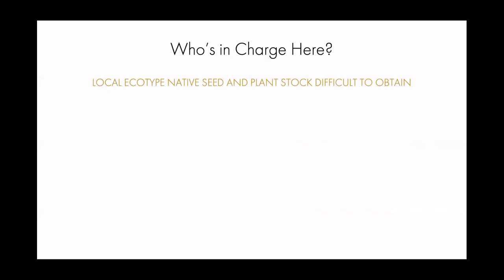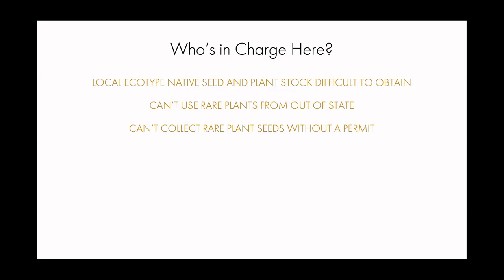So who's in charge here? Local ecotype native seed and plant stock is difficult to obtain, especially in high numbers when seeding by the acre or by dozens of acres. You're not allowed to use rare plants from out of state on most ecological restoration projects regulated by state agencies such as the Natural Heritage Endangered Species Program of Mass Wildlife or the UMass Amherst pollinator-friendly certification program for solar projects. You also can't collect rare plant seeds locally without a permit, which are difficult to obtain. At-risk pollinators, like rare plants, are in decline for the same reason in most cases — as we saw from the 94 percent plant-pollinator network loss in New England over the past 125 years.